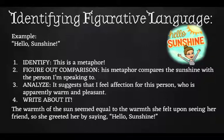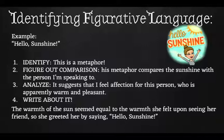Here's what you do. Identify it: 'Hello sunshine' — this is a metaphor. Figure out the comparison: this metaphor compares the sunshine with the person I'm speaking to. Analyze it: it suggests I feel affection for this person who is apparently warm and pleasant. Write about it: 'The warmth of the sun seemed equal to the warmth she felt upon seeing her friend, so she greeted her by saying hello sunshine.' Notice I didn't even say 'metaphor' in that sentence — but that was analytical.